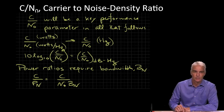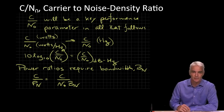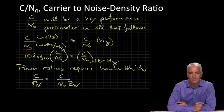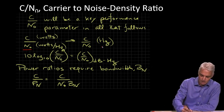Carrier-to-noise density ratio is a very important parameter that defines how strong the signal is in the receiver. The carrier part is just the signal from the satellites, and that's a power in watts. On the denominator we have this term N₀, which is a noise density — how much noise power there is for each hertz of bandwidth. The units of that term are in watts per hertz, so the carrier-to-noise density ratio is in units of watts over watts per hertz, giving us units of hertz.